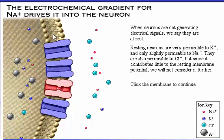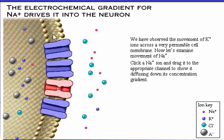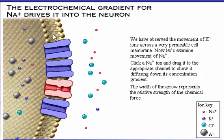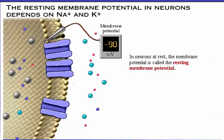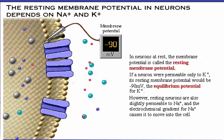We have observed the movement of potassium ions across a very permeable cell membrane. Now let's examine the movement of sodium. In neurons at rest, the membrane potential is called the resting membrane potential. If a neuron were permeable only to potassium, its resting membrane potential would be minus 90 millivolts — the equilibrium potential for potassium. However, resting neurons are also slightly permeable to sodium, and the electrochemical gradient for sodium causes it to move into the cell.